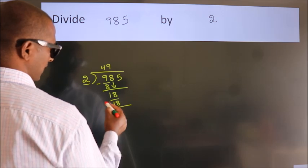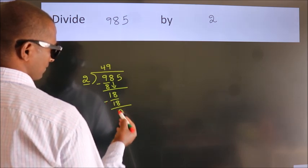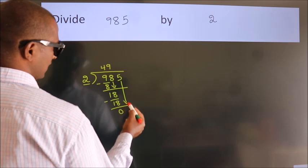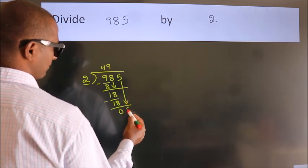Now we subtract. We get 0. After this, bring down the beside number. So 5 down. So 5.